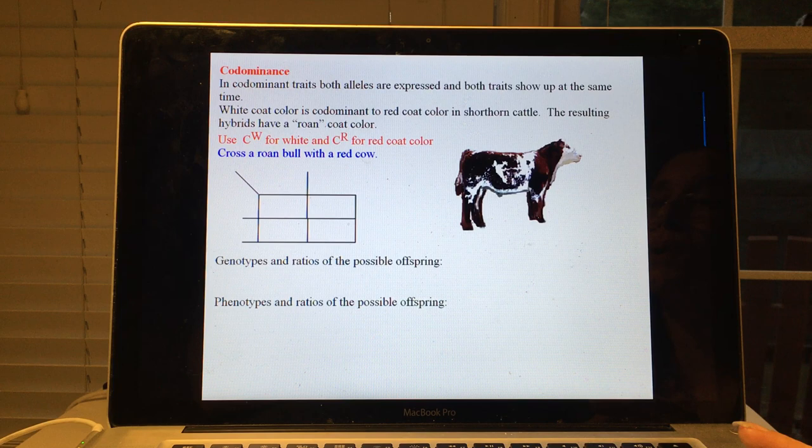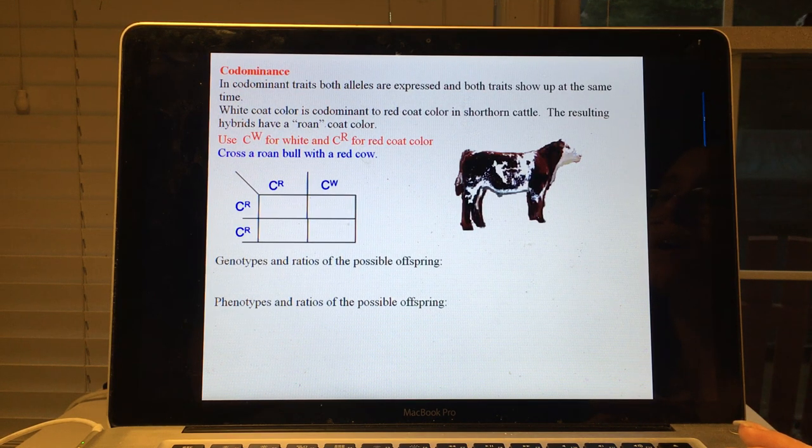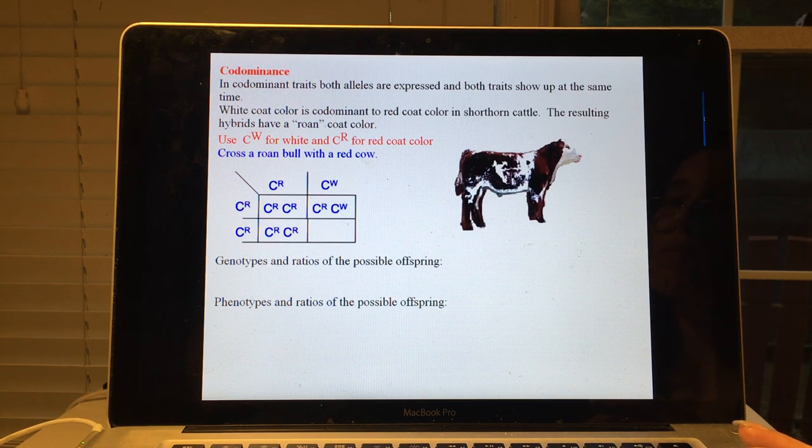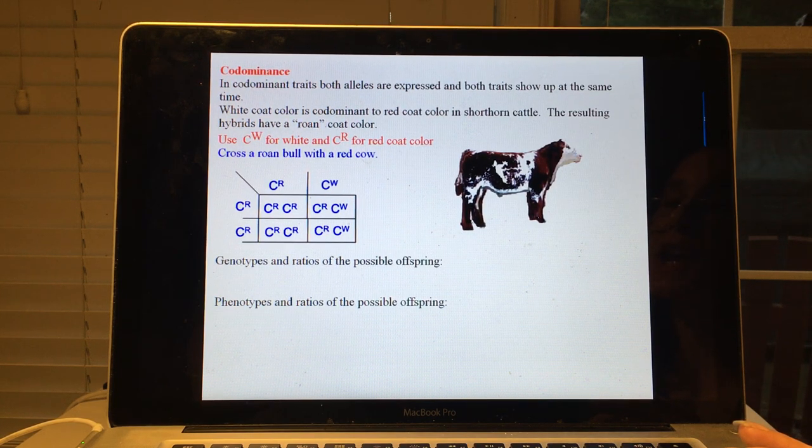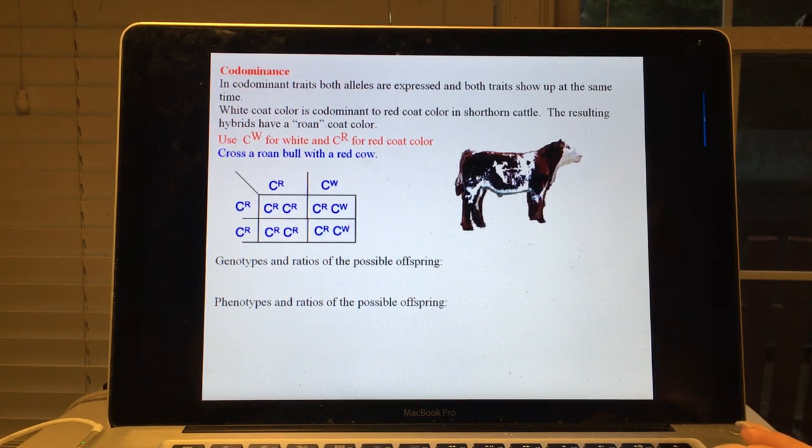So if we cross a roan bull—and the gametes that the bull produces, the males always go across the top—and a red cow, and you have the red down the side, you would get a 50-50 chance of having a red offspring versus a roan coated offspring. You could not get white coated offspring.